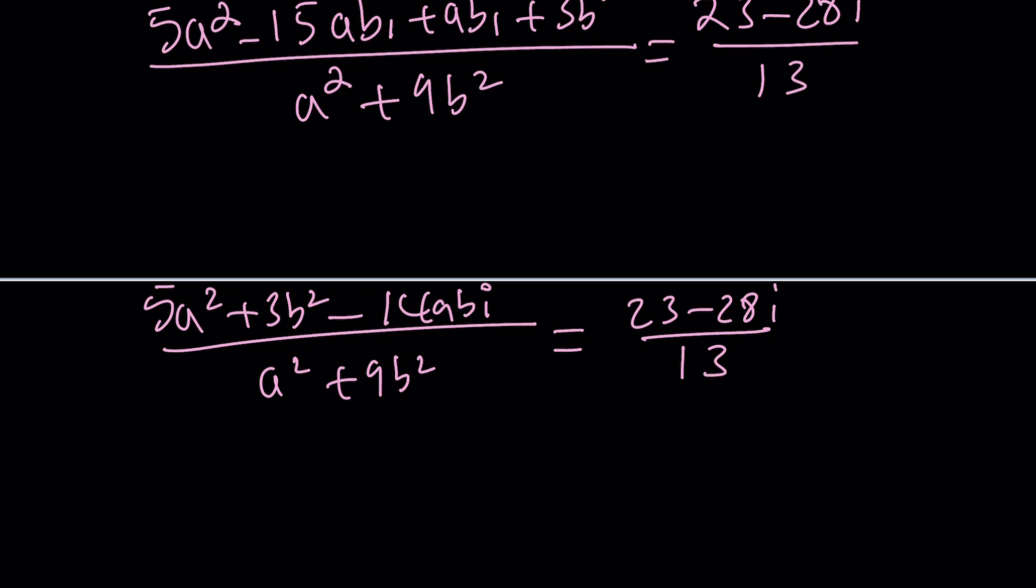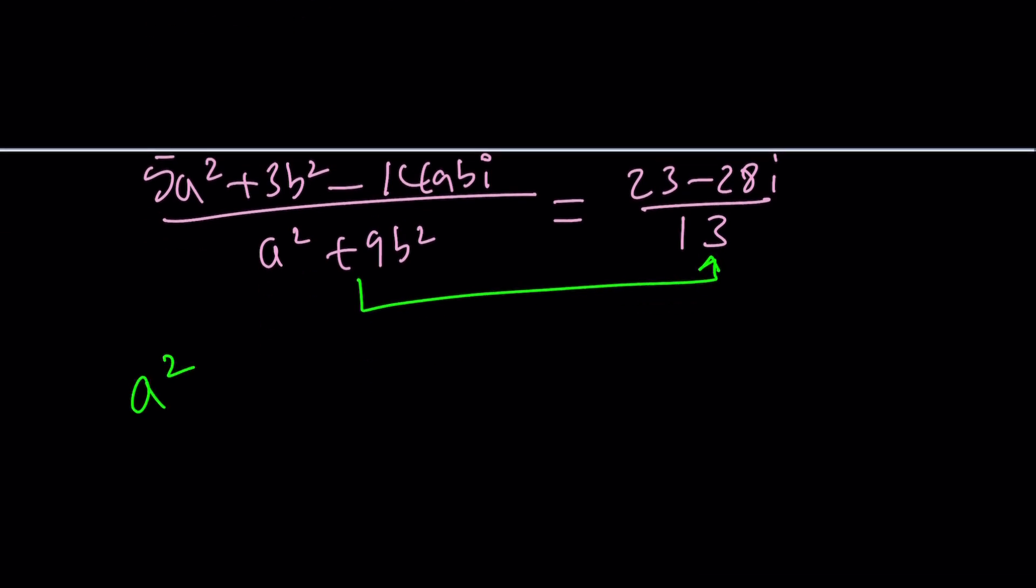Now let's simplify the numerator. We get 5a squared plus 3b squared minus 14abi all over a squared plus 9b squared equals 23 minus 28i divided by 13. How do you solve a problem like this? Well wouldn't it be nice if the numerator equals the numerator and the denominator equals the denominator? So what if this equals 13? I'm looking for nice solutions so perhaps a and b are integers. And in this case a equals 2 like 4 plus 9 is 13.